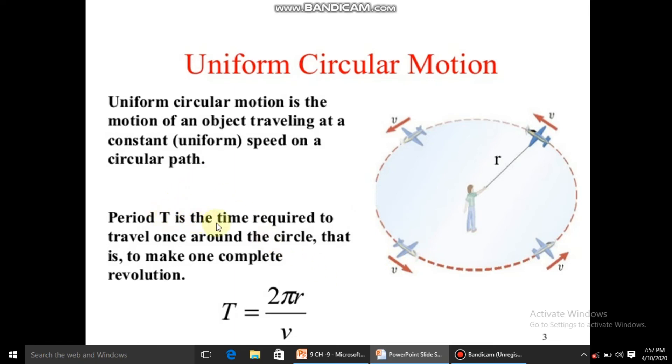To calculate this, we have a formula. We take time period T. In time period T, the distance traveled is the circumference of that circular path. The circumference formula is 2πr. The time period T is the time required to travel once around the circle, to make one complete revolution. So time period T equals 2πr by v, where v is the velocity.